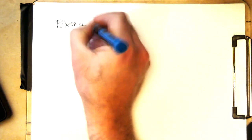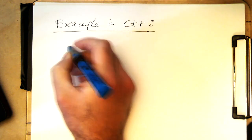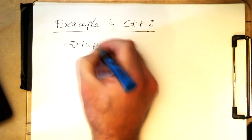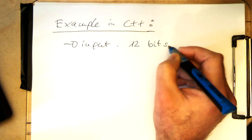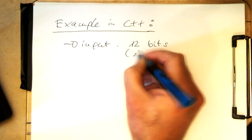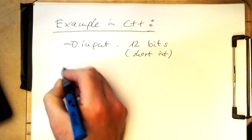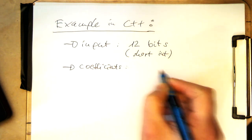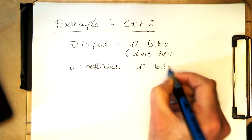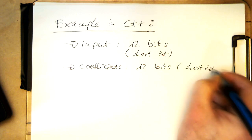This is a C++ example of fixed-point filtering. The input is 12 bits, which fits into a short int. The coefficients we would also like to have at 12 bits, and that would also fit into a short int — a short int is 16 bits usually.